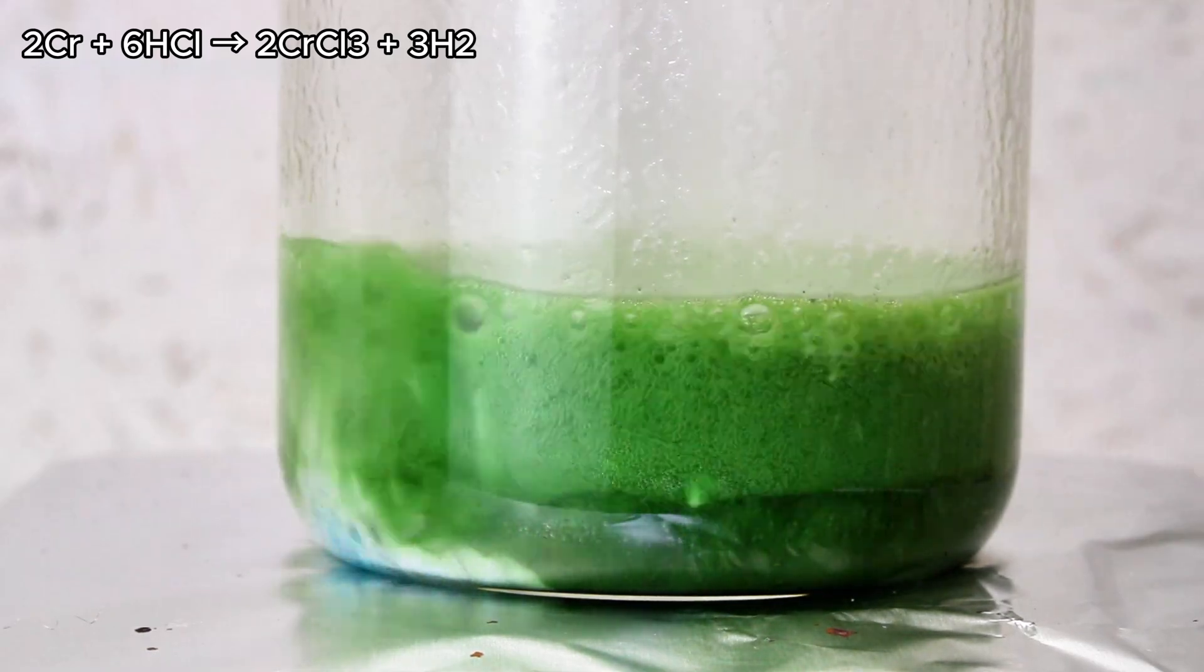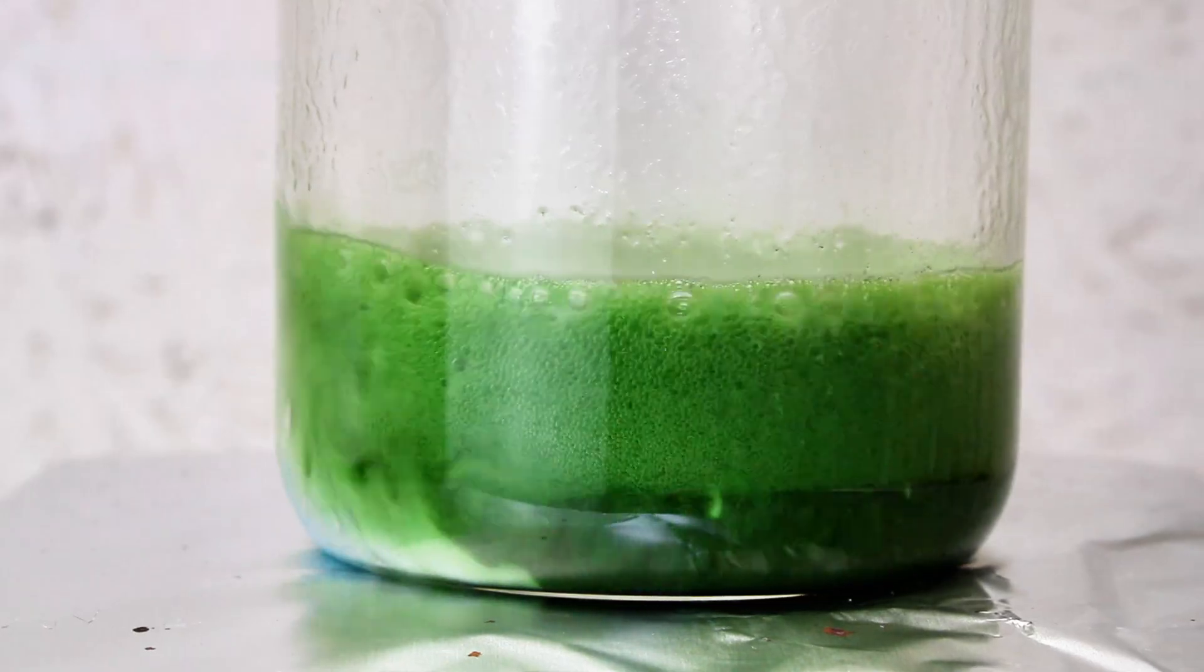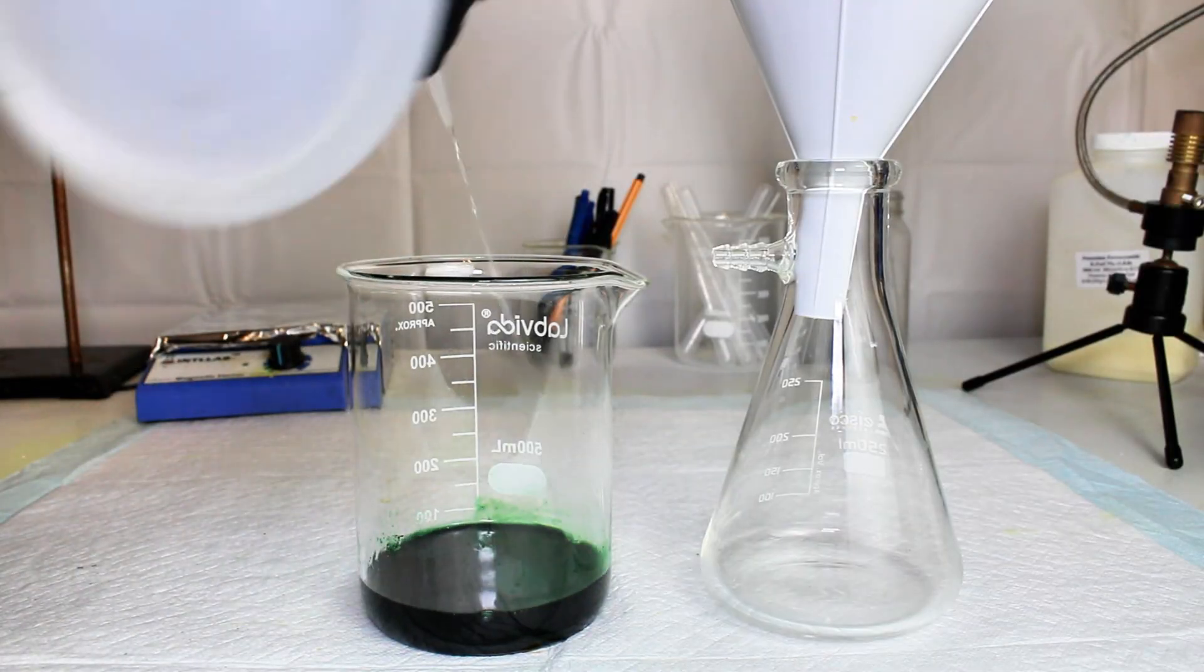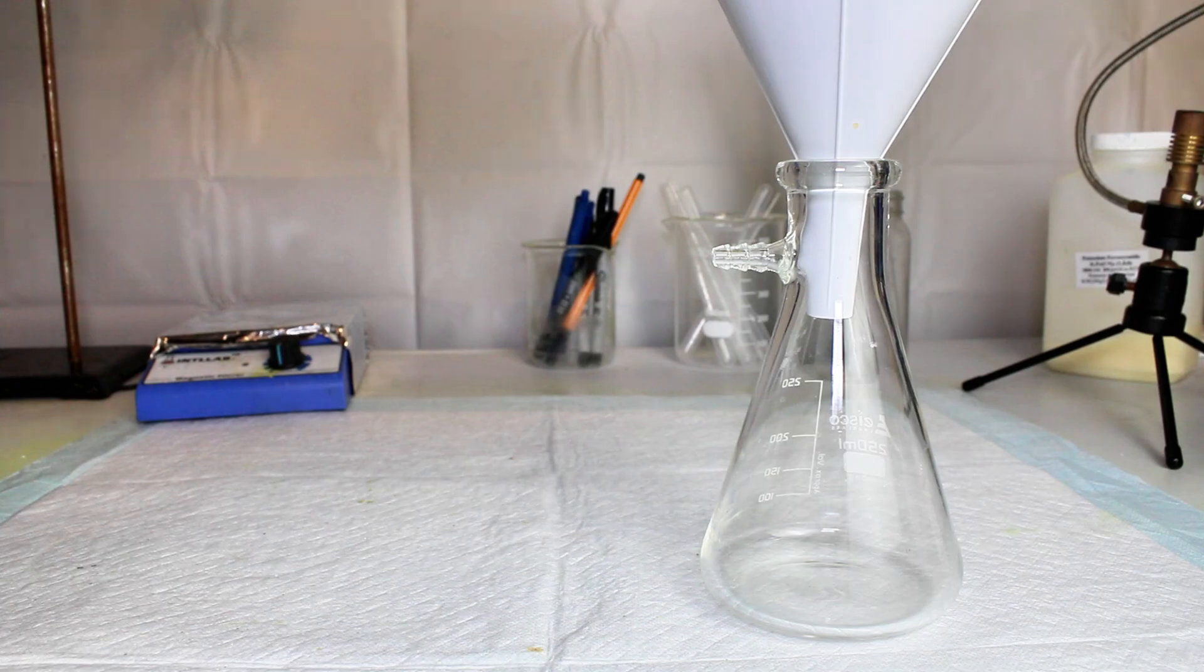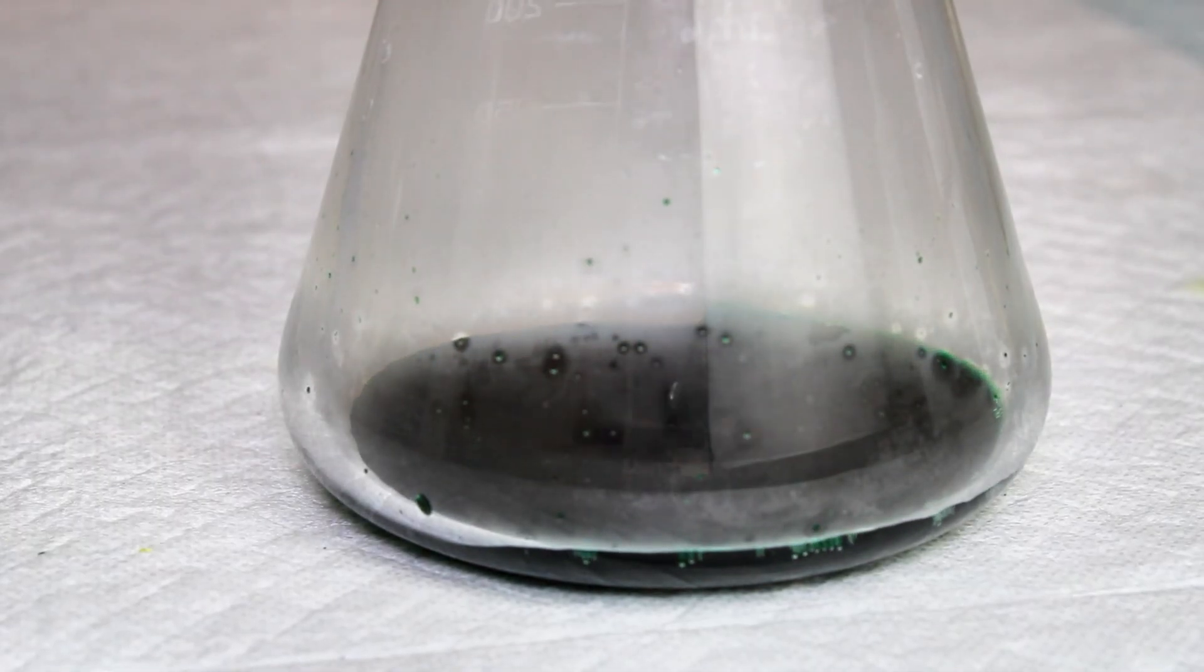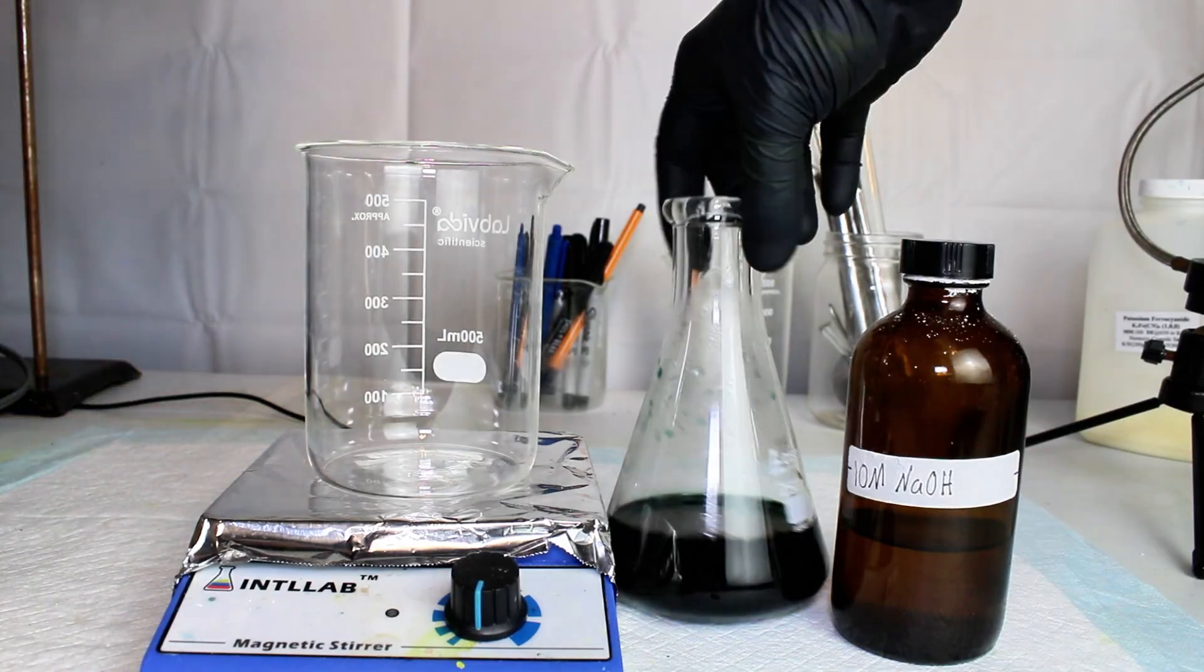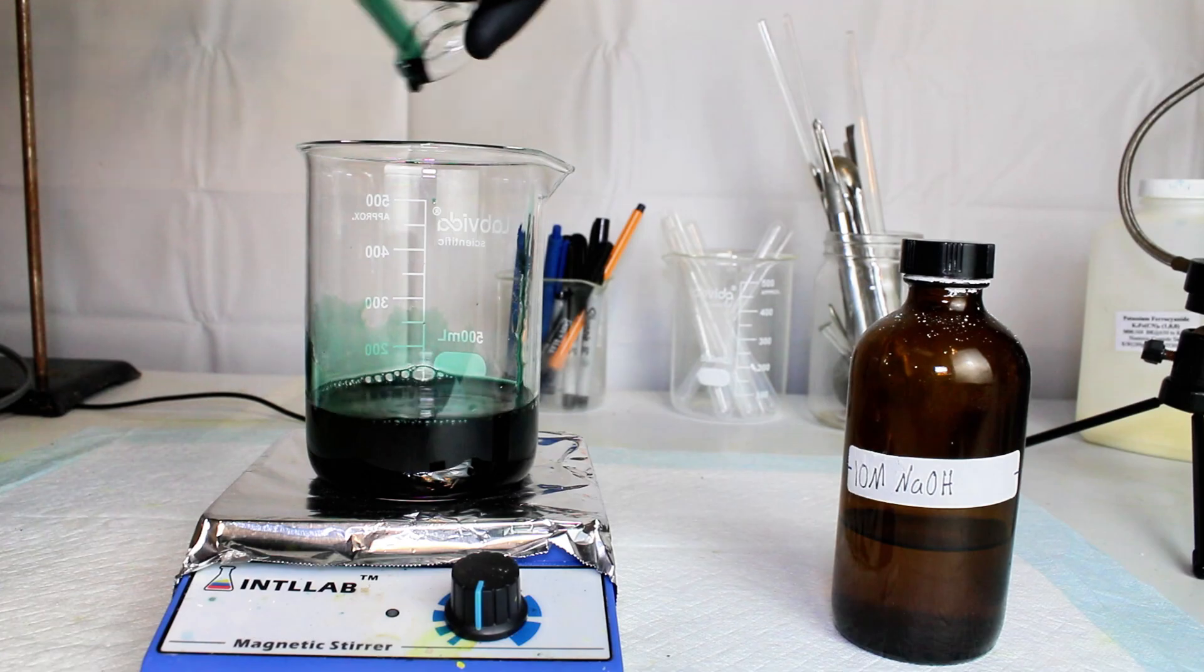Interestingly enough, you can see a bit of blue at the bottom left of the beaker as the chromium dissolves, and that's a bit of chromium 2 chloride that exists only very briefly. Once all the chromium had dissolved, I went ahead and passed the solution through a coffee filter to make sure there was no tiny undissolved pieces, and then I transferred the filtered chromium chloride solution to a beaker.